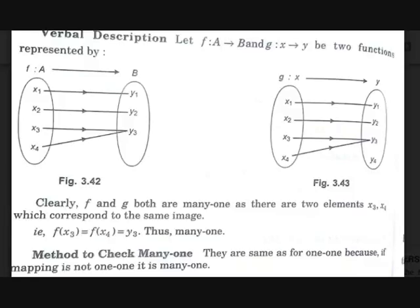How to check whether a function is many-one or not? The method to check many-one is the same as for one-one function — because if a mapping is not one-one, it is many-one. We saw in the last video how to check whether a function is one-one. If you haven't watched it, go check it.